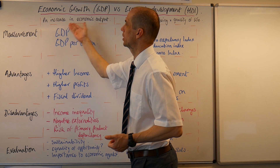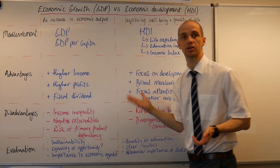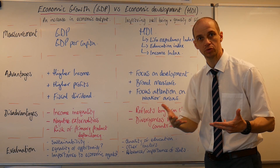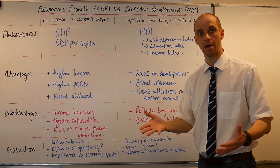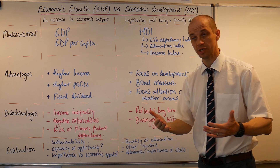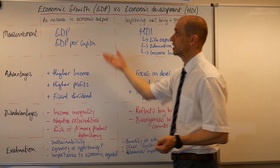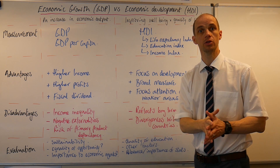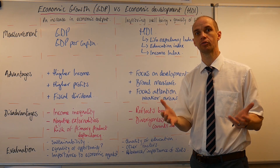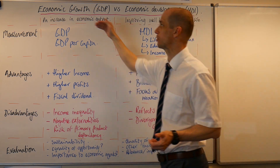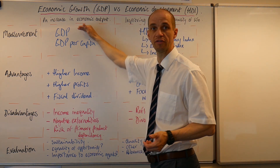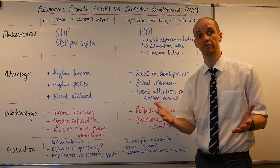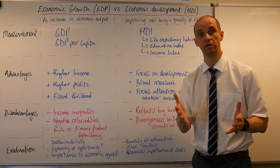First up, when it comes to economic growth, it's an increase in economic output — it's about producing more goods and services and thereby increasing incomes. It's measured according to total gross domestic product. Now this should really reflect real values so that you adjust the information for inflation.